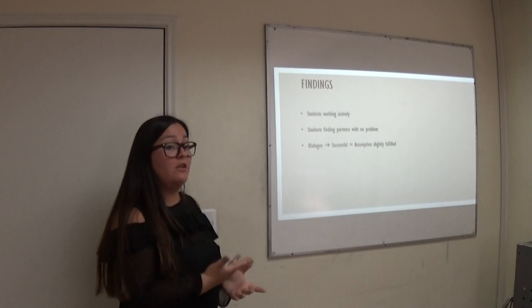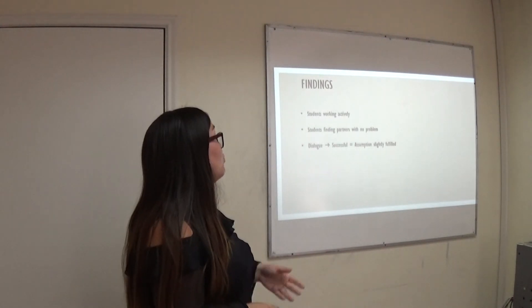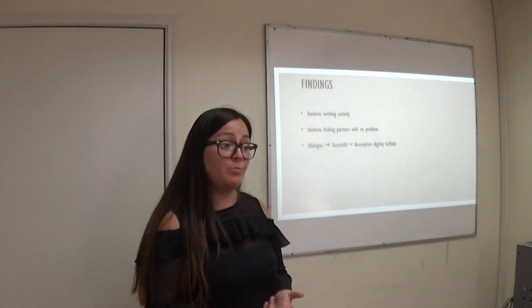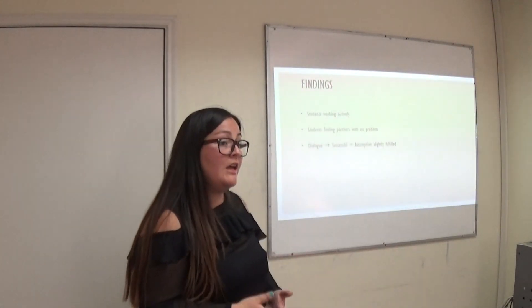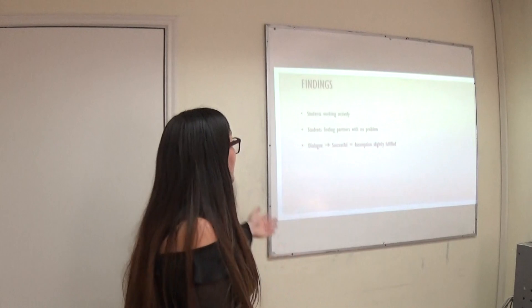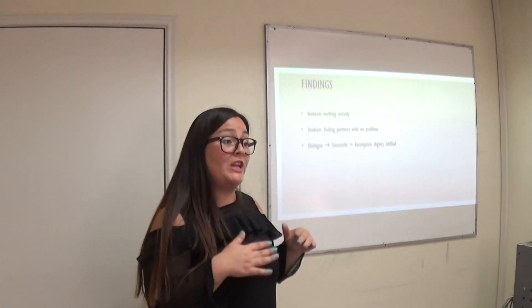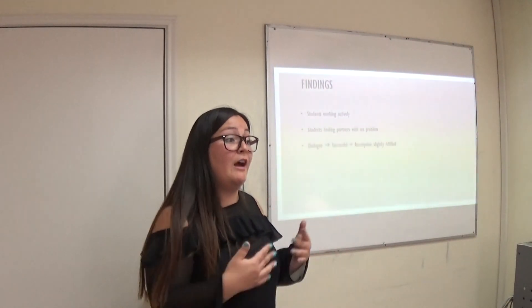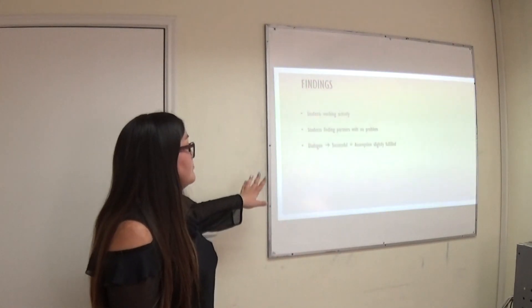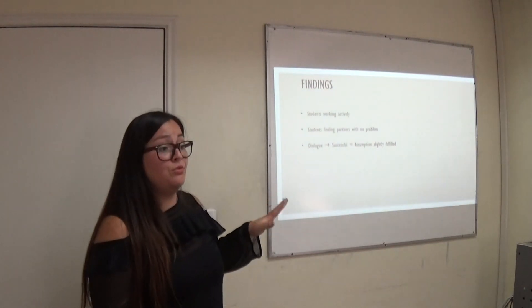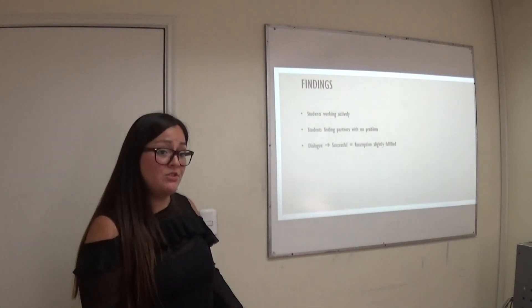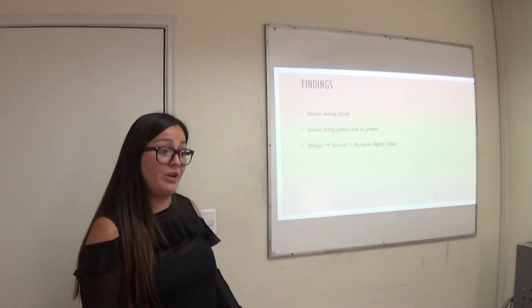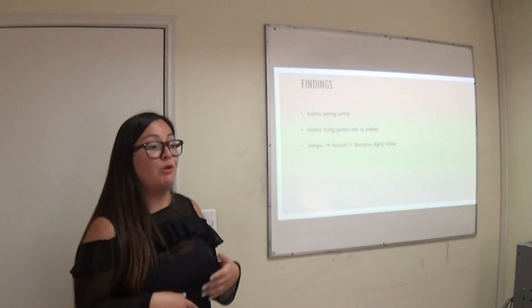Findings. From the triangulation, we could say that it was observed that students, when it was applied the lesson plan, they could work actively, and they, as they were working collaboratively. And as the students were used to work individually, at the moment that they had to work in groups, it wasn't a problem to do that. To find a partner or group. And in this part, the students had to create a dialogue with at least six interactions. So it was observed that each group finished the activity without any problem. So in that way, the assumption is slightly fulfilled. But why slightly?